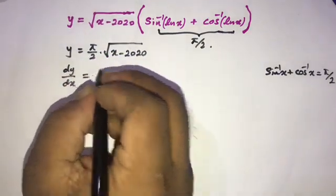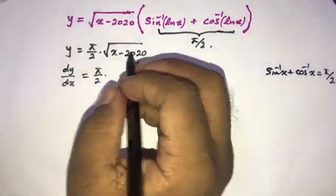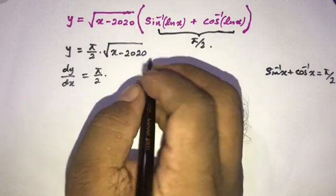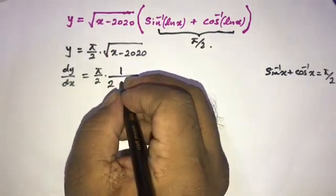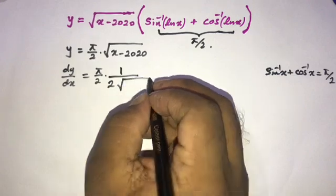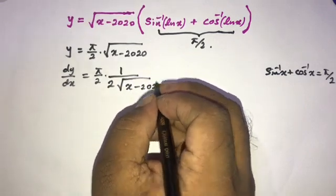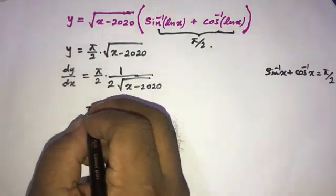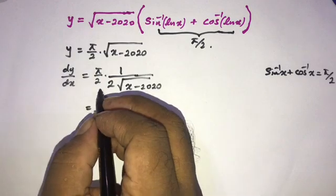and derivative of square root function, so 1 over 2 times the square root of x minus 2020. So this is equal to π over, now 2 times 2